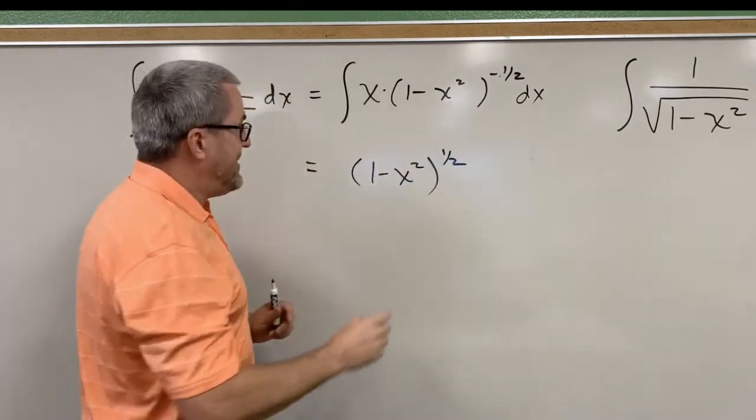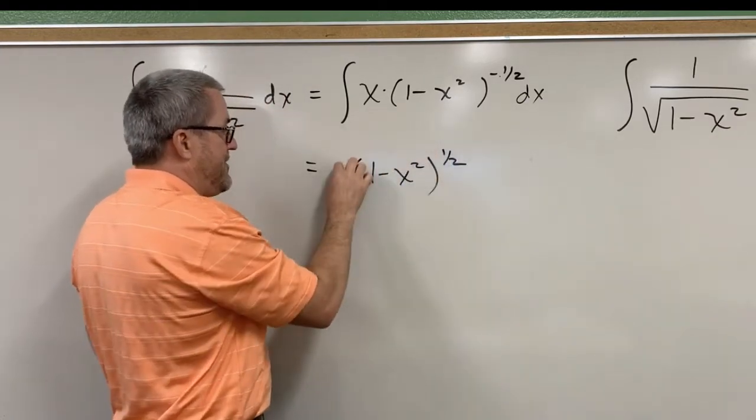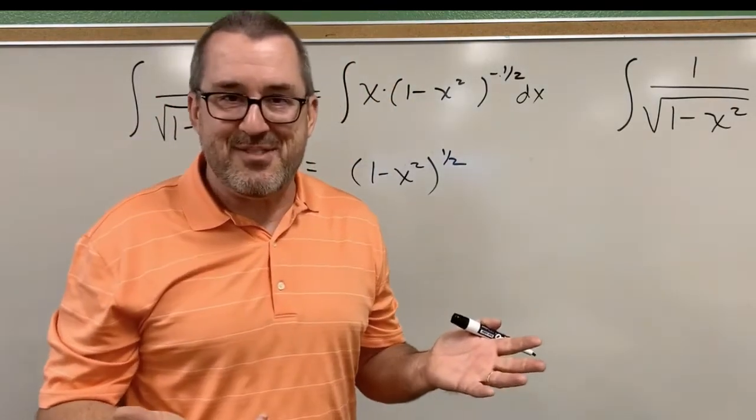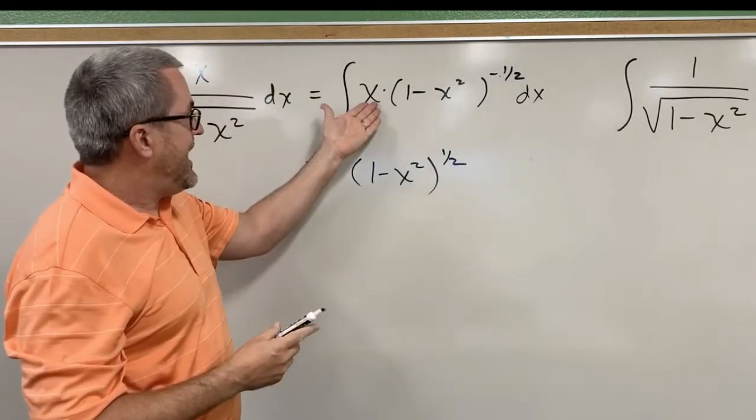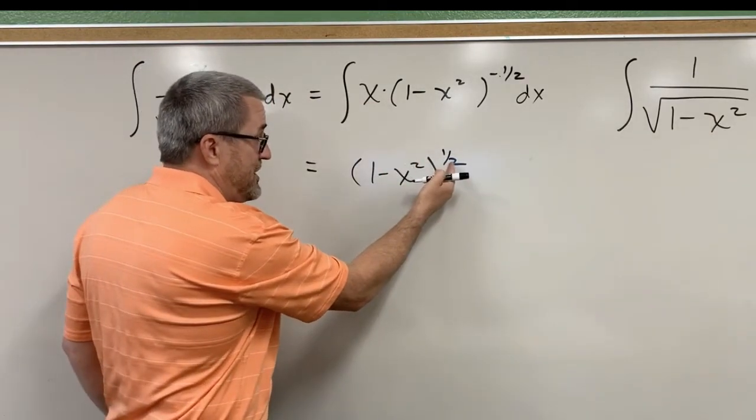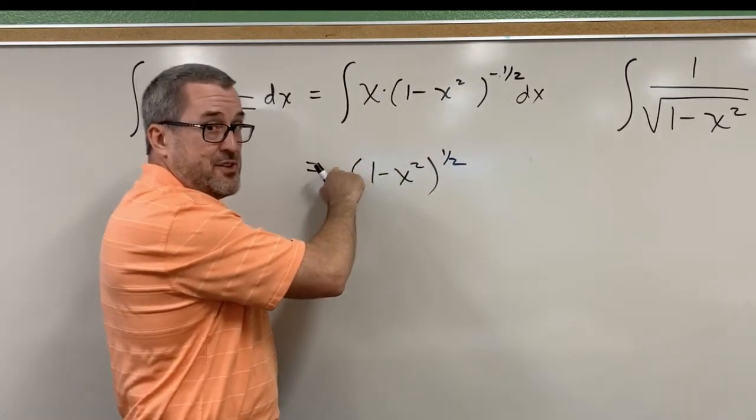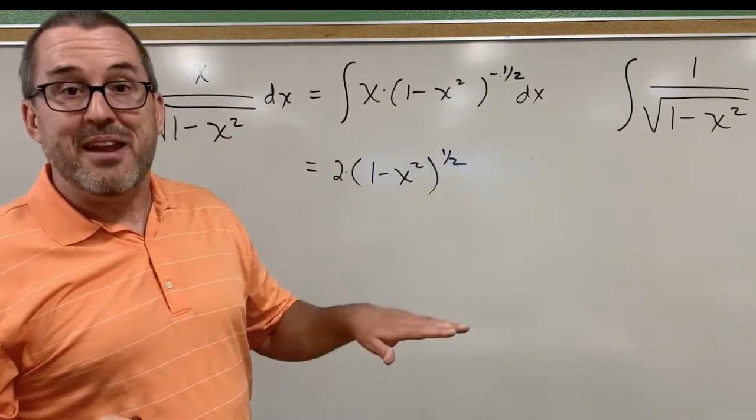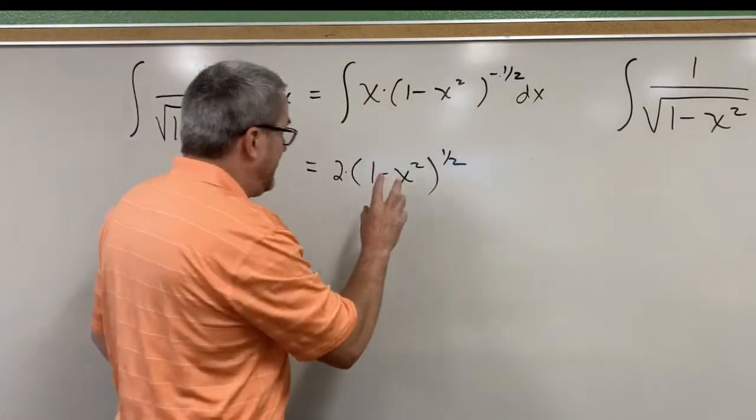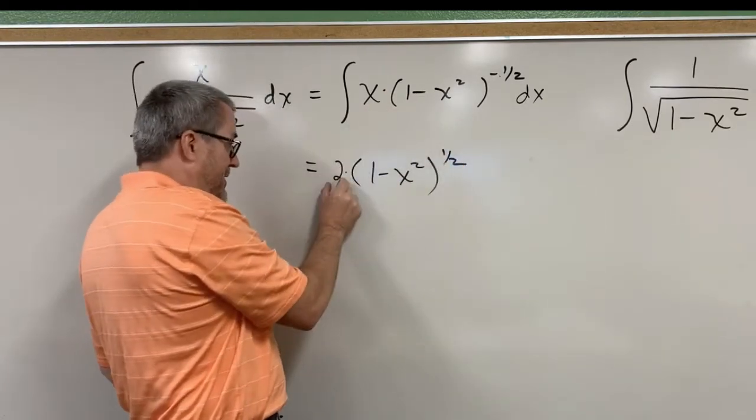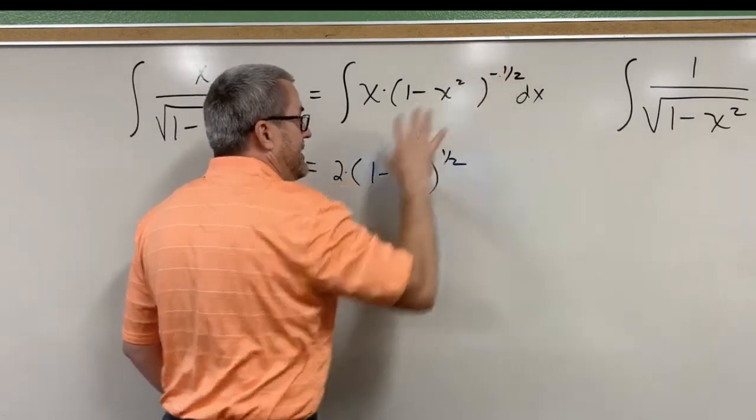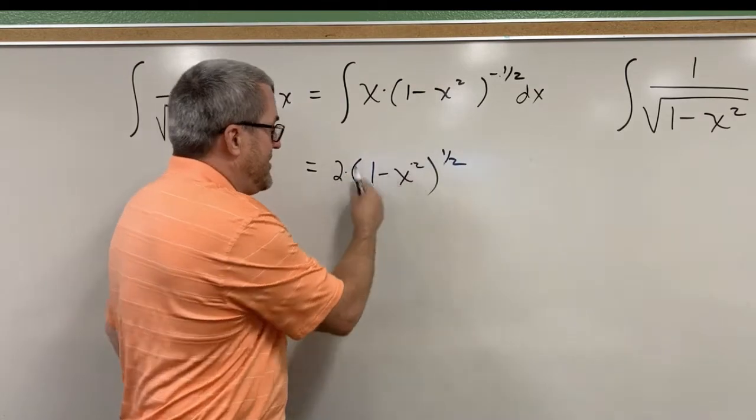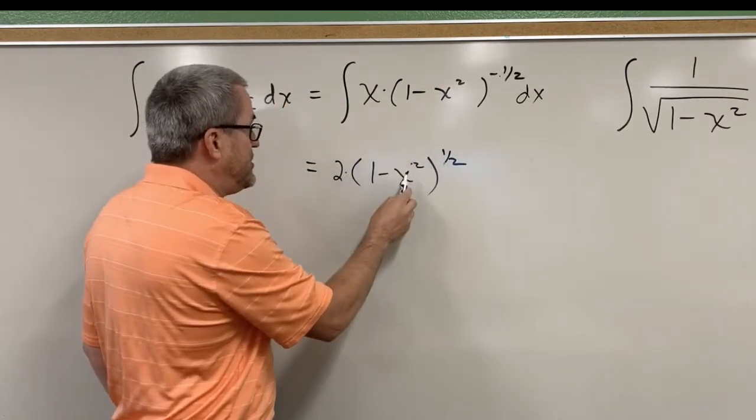But when I'm done, there's a couple things we have to consider. First of all, the one-half that would have come out front in the derivative process, notice that there is no coefficient of one-half. There is no factor of one-half in my integrand up here, and so I have to think about if the one-half came out front in the differentiation process, a factor of two must have been there to eliminate that one-half.